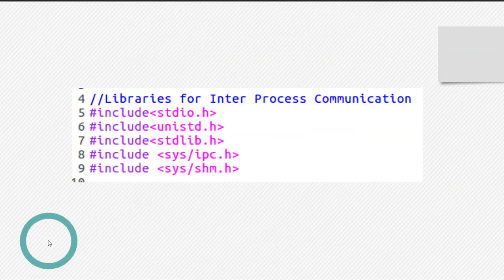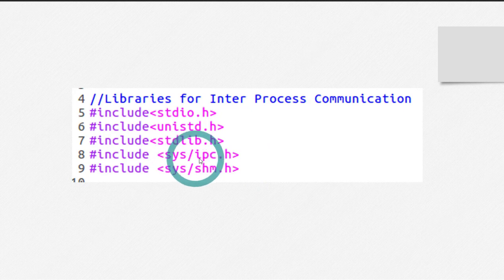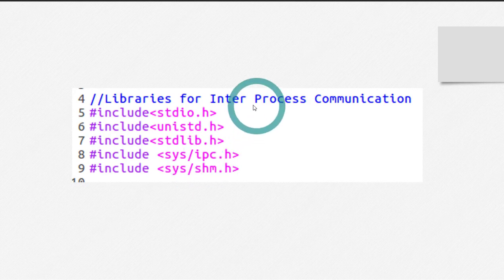Okay. Let's look at the libraries that you will be using in this topic. These are system IPC and system SHM. So you have to use these two extra libraries for inter-process communication.